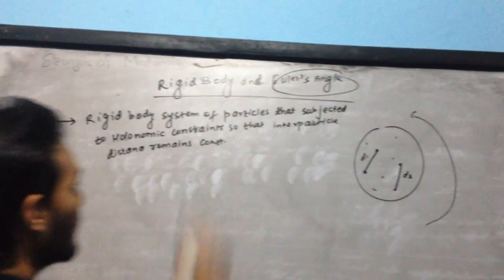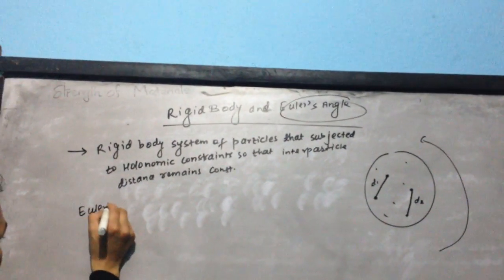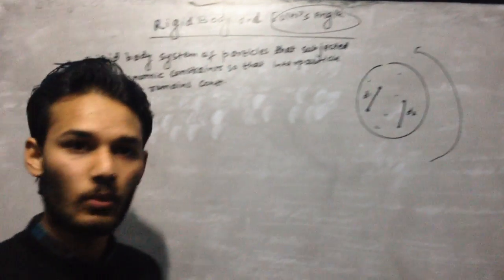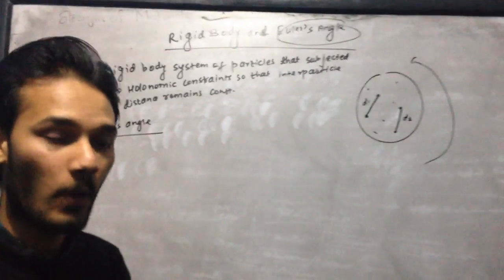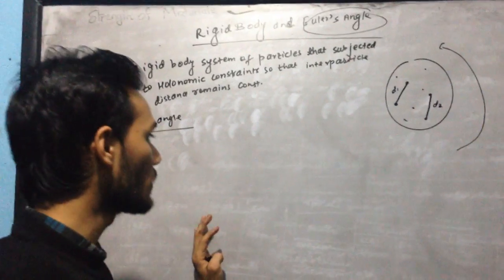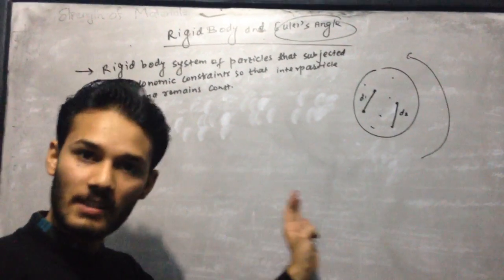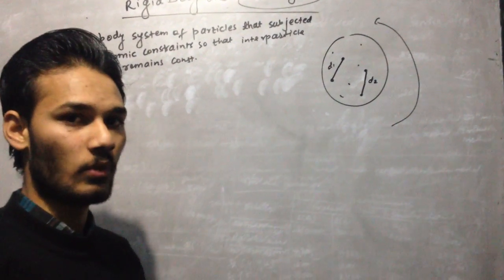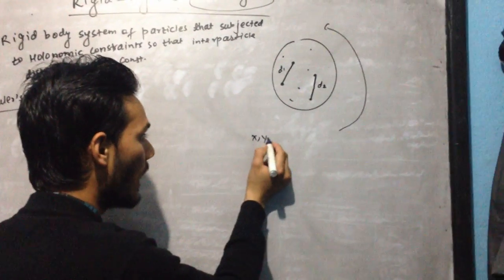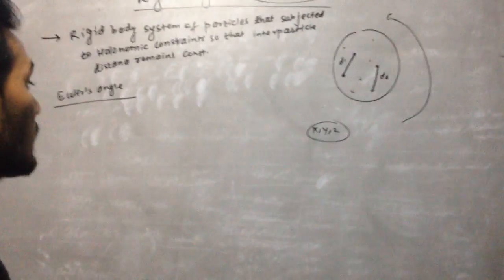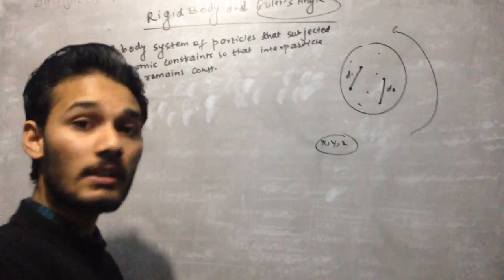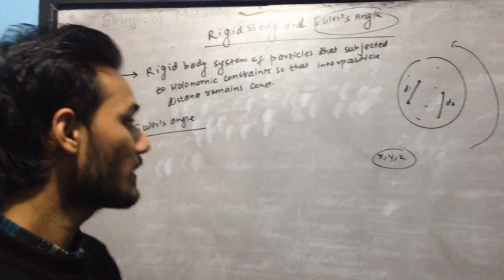The second topic is Euler's angles. A rigid body has two types of motion: translational motion and rotational motion. To specify any body in translational motion, we require three coordinates — X, Y, and Z. But to specify the configuration of any body in rotational motion, we require three additional coordinates, and these are determined by Euler's angles.